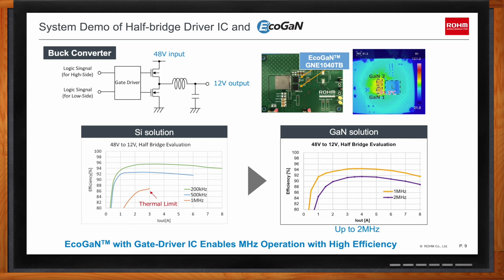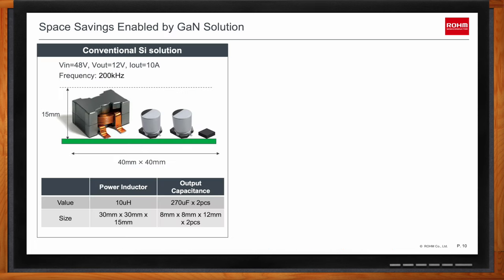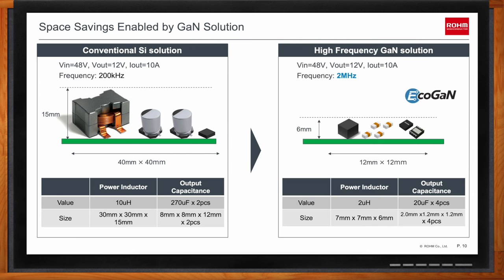What kind of space savings are we really looking at with EcoGaN? The GaN solution provides a 91 percent reduction in area and a 94 percent reduction in volume. This means more functionality in a much smaller form factor with improved energy density. As systems continue to integrate more functionality into smaller spaces, that means fewer parts, reduced area, and increased system power density.